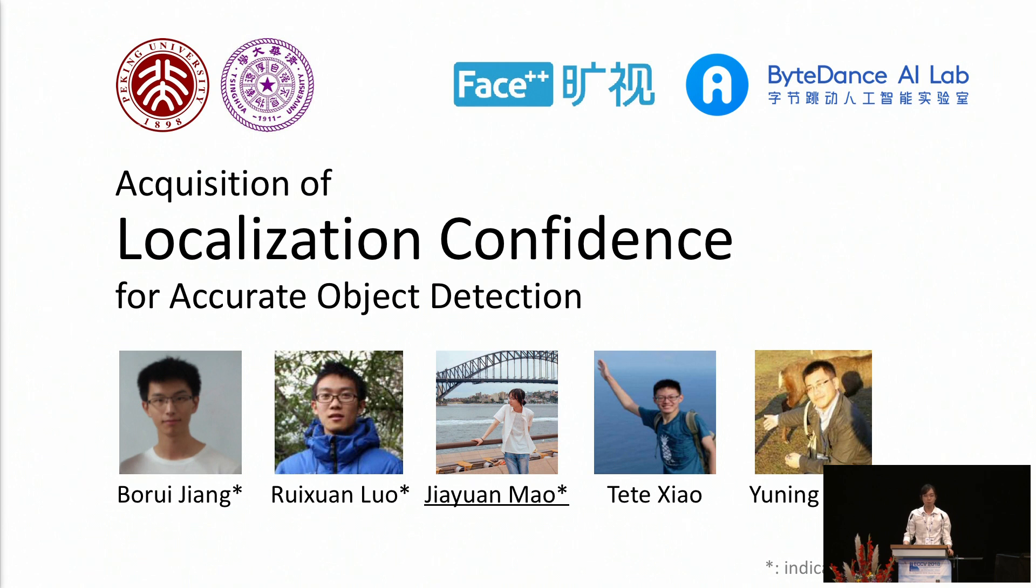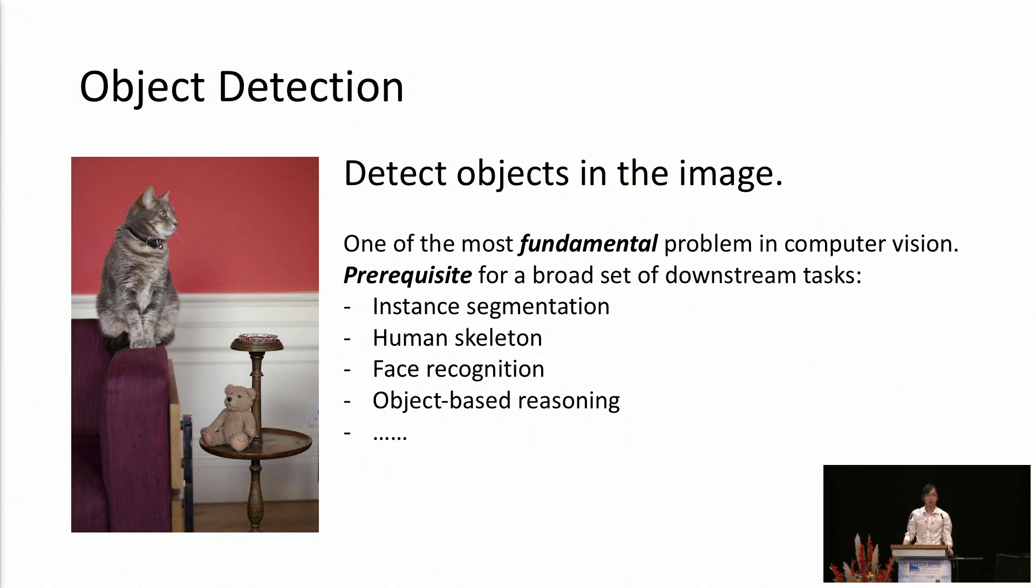This is our joint work with Borei, Reixuan, Clutter, and Yuning. Object detection is one of the most fundamental tasks in computer vision. Most importantly, it is a prerequisite for a broad set of downstream tasks.